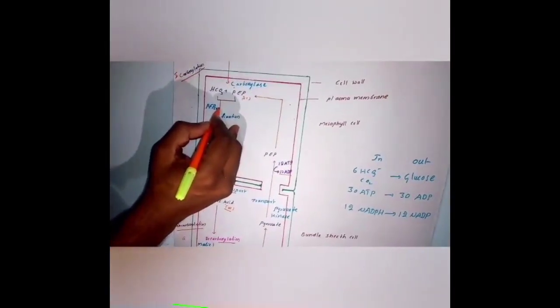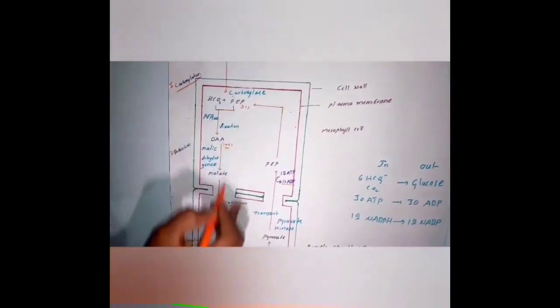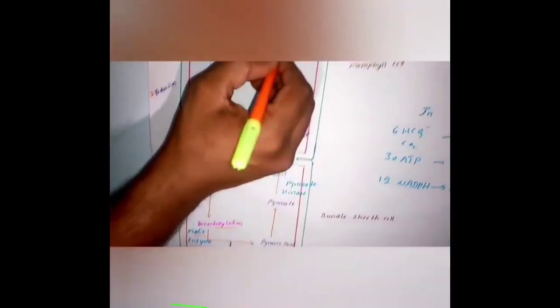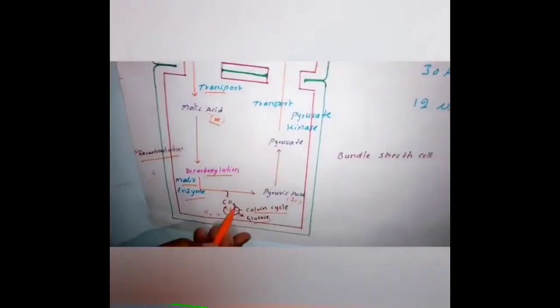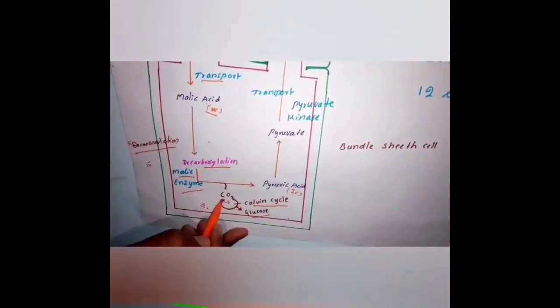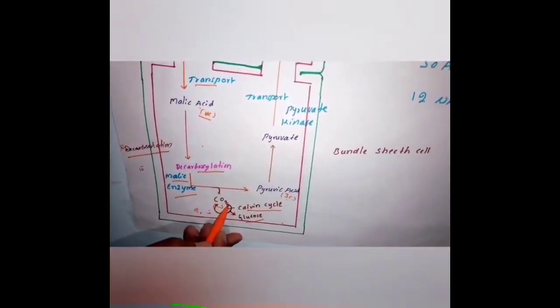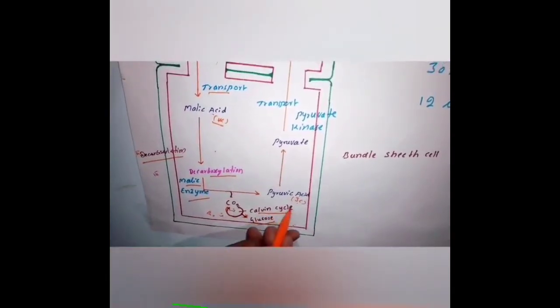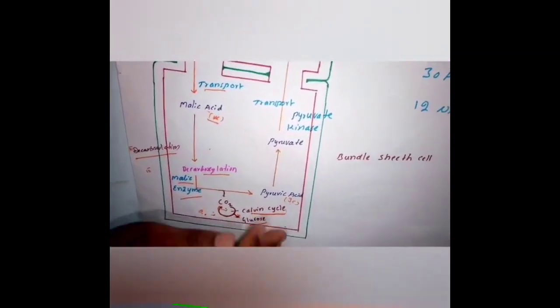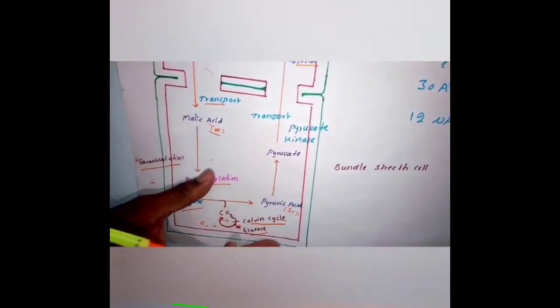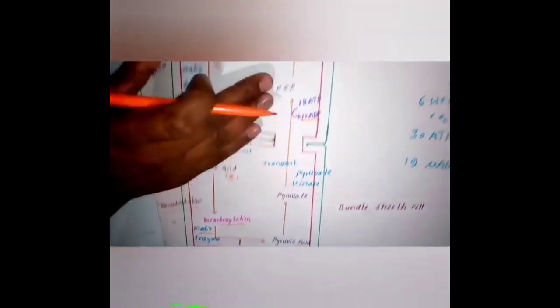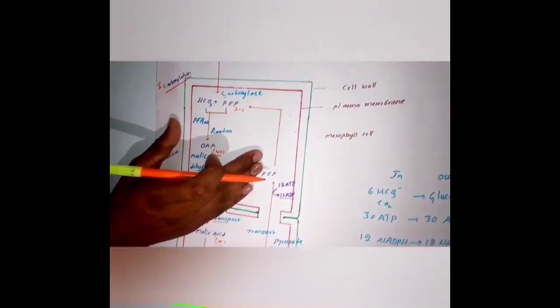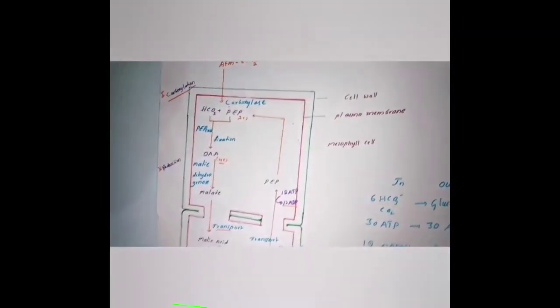The transportation of compounds occurs from mesophyll cells to bundle sheath cells and from bundle sheath cells back to mesophyll cells. In the bundle sheath cells, free atmospheric carbon dioxide is released and glucose is formed by the process of the Calvin cycle. Along with the Calvin cycle, additional reactions are going on to sustain the dark reaction.